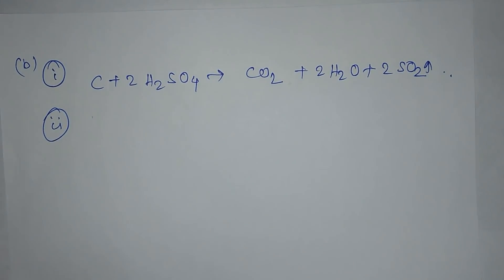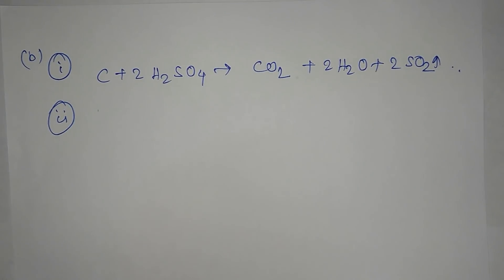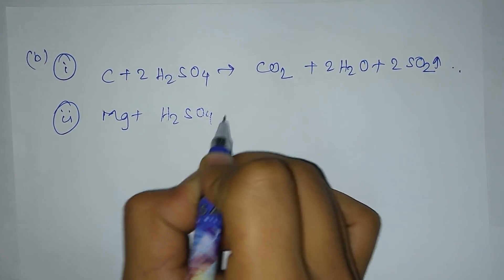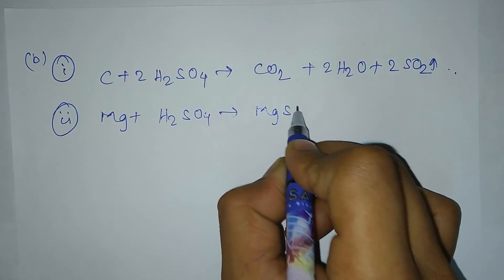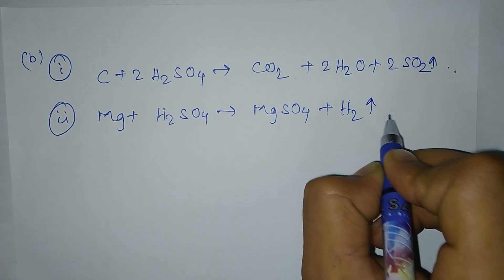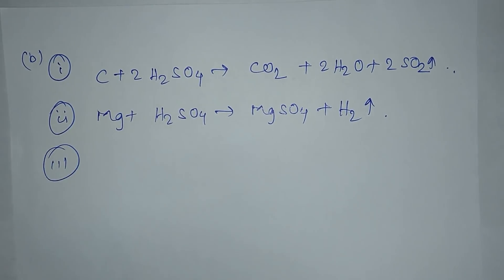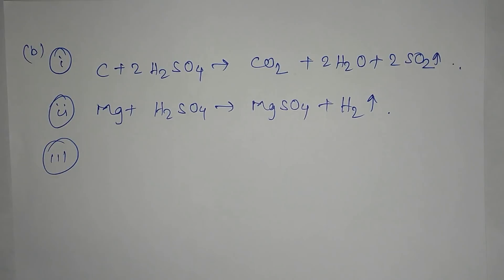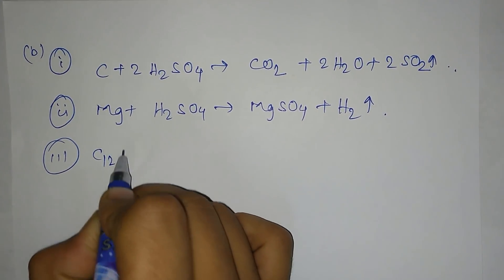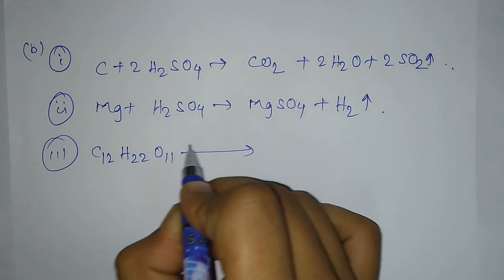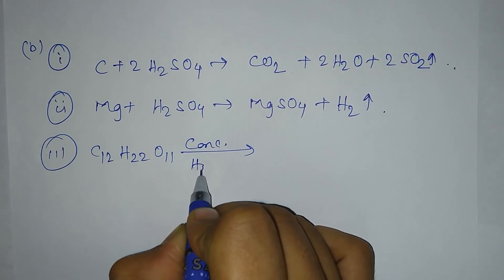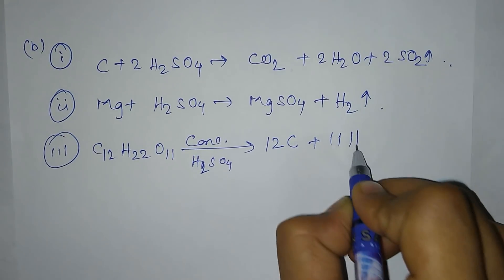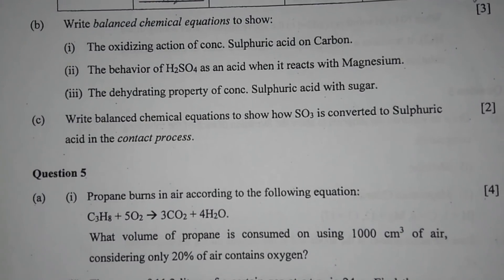Number 2 — the behavior of sulfuric acid as an acid when it reacts with magnesium: it gives magnesium sulfate and produces hydrogen gas. Number 3 — the dehydrating property of concentrated sulfuric acid with sugar C12H22O11: in the presence of concentrated sulfuric acid, it is broken down into 12C plus 11H2O.